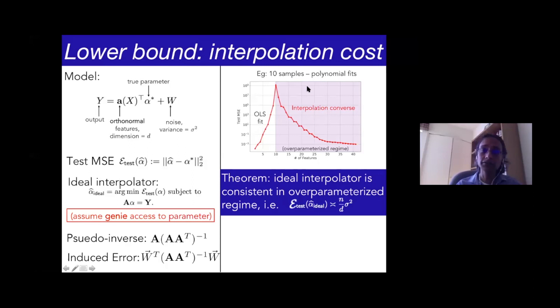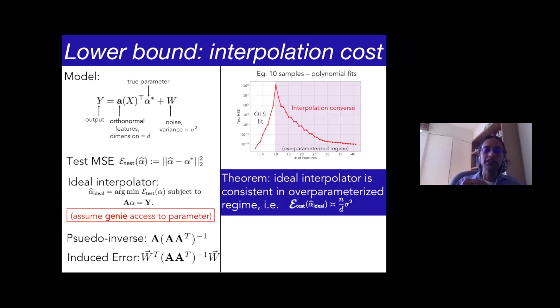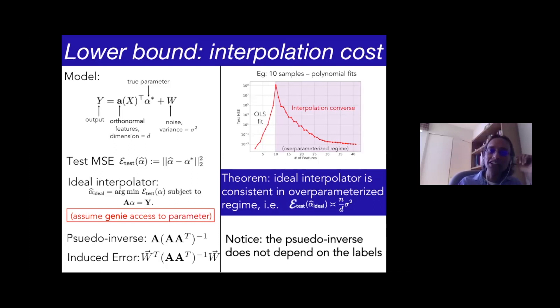Plotting this for the case of polynomial fits to 10 samples, you can see a converse: as you increase the number of features (the polynomial degree), the lower bound on test MSE just keeps dropping — asymptotically it drops like n over d. So the best mean squared error for the best interpolator drops as one over the number of features. This bound holds regardless of what algorithm we use to find the interpolating solution.